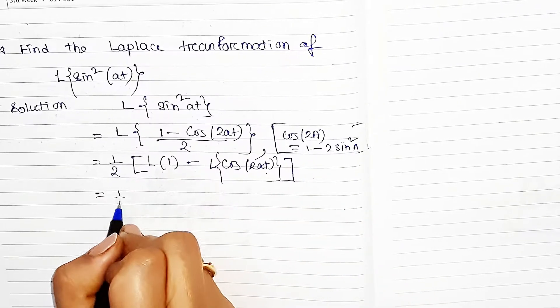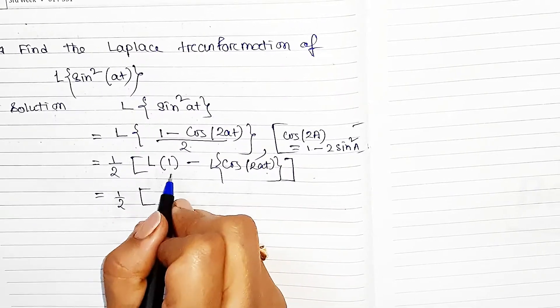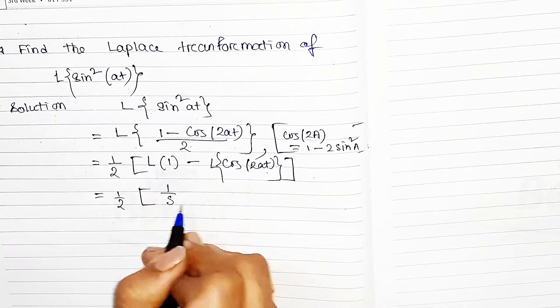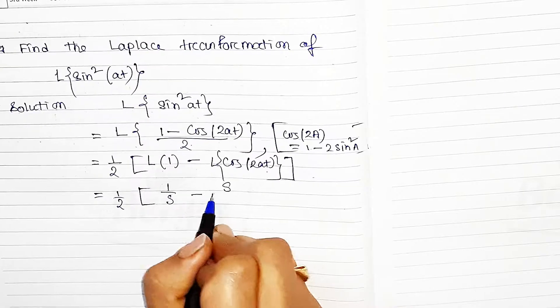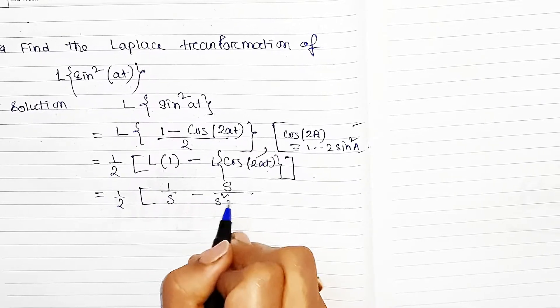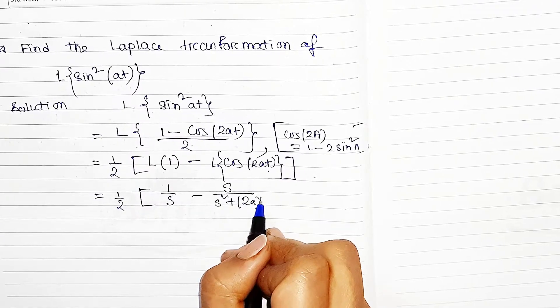In the next line we can write L of 1, which is 1/s, minus L of cos(2at), which is s/(s² + (2a)²).